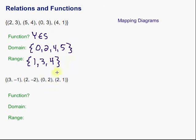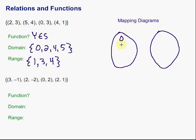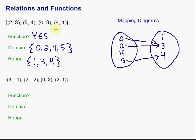We don't have to write the 3 twice, even though it appears in our ordered pairs twice. To make a mapping diagram, we put the domain and the range into separate bubbles. Our domain is 0, 2, 4, and 5. Our range is 1, 3, and 4. Then we draw arrows to connect the ordered pairs: 2 goes to 3, 5 goes to 4, 0 goes to 3, and 4 goes to 1. That would be our mapping diagram for that relation.